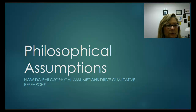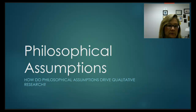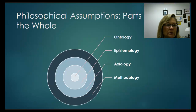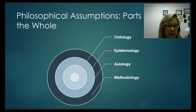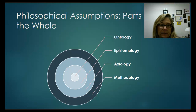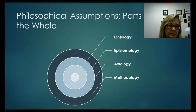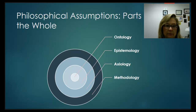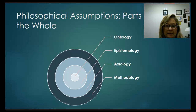Philosophical assumptions drive qualitative research because they actually drive every decision you make. Notice that in this image, these concepts aren't separate and one doesn't lead to the other in a linear sequence — they're parts of a whole. Starting with ontology at the core, everything emanates from that, driving out epistemology as the next circle, then axiology and methodology.